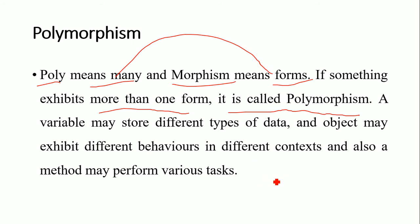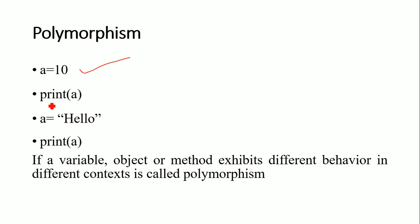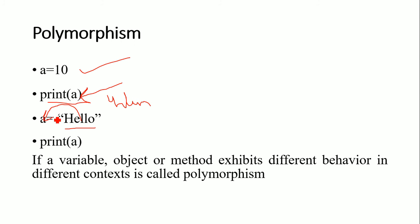A variable can be used to store different types of data. Objects can have different behaviors, and methods can have different behaviors. For example, when a is equals to 10 and you print a, it is treated as an integer variable. This is because Python is a dynamically typed programming language — there is no predefined data type. When you assign a value, the Python virtual machine decides how to treat that variable. Similarly, when a is equals to 'hello', immediately a will be treated as a string. So the same variable name exhibits different values.